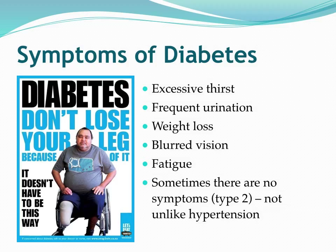In particular, blurred vision and fatigue are associated with that hyperglycemia we talked about — with the inability of insulin to convert glucose into energy at the cellular level.